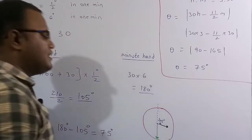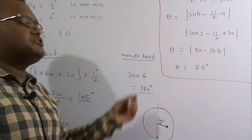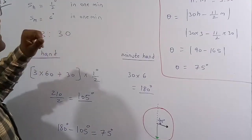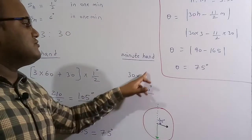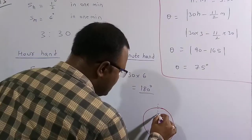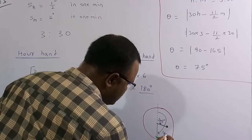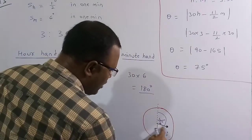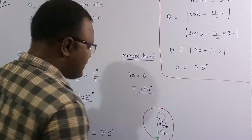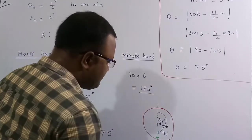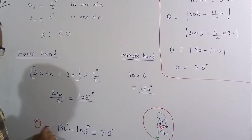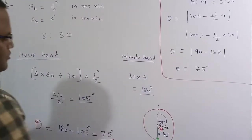For the minute hand: at 30 minutes, the angle = 30 × 6 = 180 degrees. So the minute hand is at 180 degrees. The angle between them = 180 − 105 = 75 degrees. Therefore theta = 75 degrees.